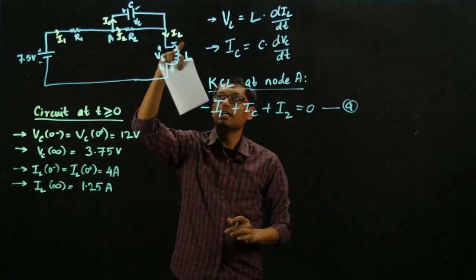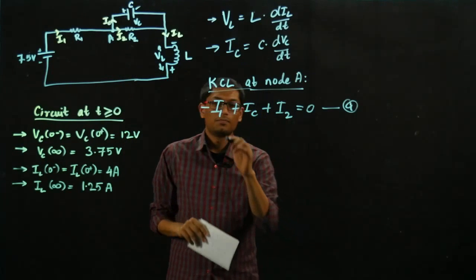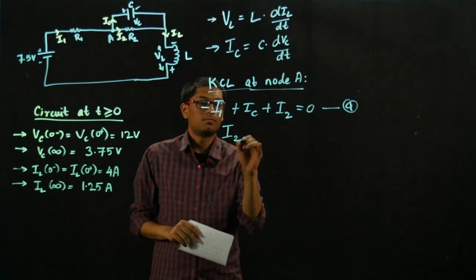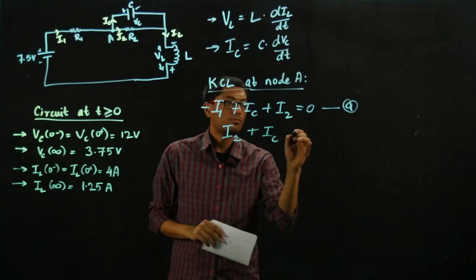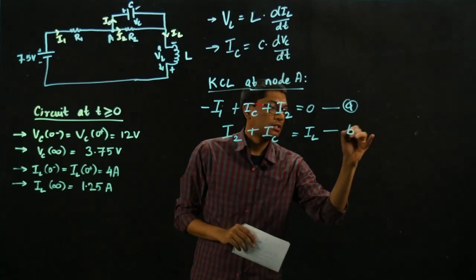Further, IL has to be the sum of IC and I2. Let's call that equation B.